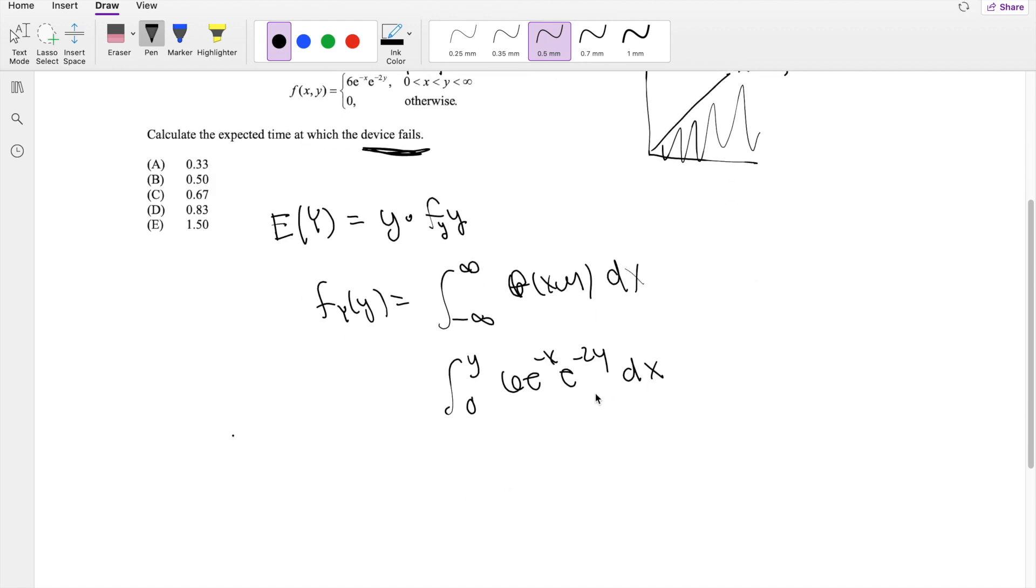So if I'm integrating with respect to dx, the 6e^(-2y) is all a constant. And then taking the integral of this, you just get the negative out front. So you get e^(-x) integrating from 0 to y.